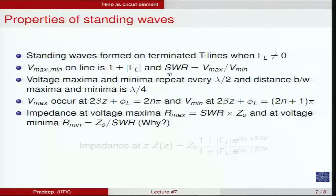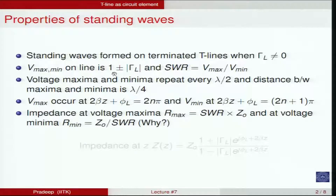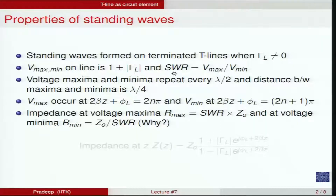We found the standing wave ratio (SWR) in the previous class. It is defined as the ratio of maximum phasor voltage to minimum phasor voltage on the transmission line. Maximum voltage is 1 plus |gamma_L|, occurring when the phase term goes to 0 or 2pi. Minimum voltage is 1 minus |gamma_L|. The ratio of these two is the SWR, and we saw the relationship between SWR and |gamma_L|.